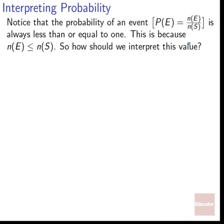Now, interpreting probability. Notice that the probability of an event P(E) = N(E)/N(S) is always less than or equal to one, because N(E) is always less than or equal to N(S). The number of ways the event can occur is always less than or equal to the total number of things that can happen, because the event is always contained within the sample space.